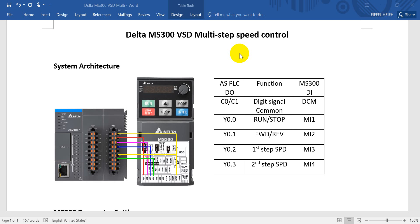We link the SPOC to the MS300 digital input. For the inverter digital input, we call it a multi-function input, defined as MI1. C0 and C1 are the digital signal common. Y0.0 from SPOC means run and stop, Y0.1 means forward/reverse, Y0.2 means first step speed, and Y0.3 means second step speed.